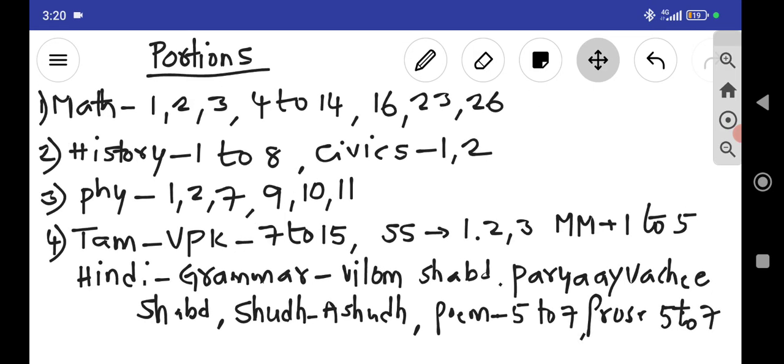Next, these are the portions what you have. For example, in math you have chapters 1, 2, 3, 4, 14, 16, 23, 26. So first 50% remaining portions were done. Now for the other subjects also you are having the portions written. You can go through these portions.